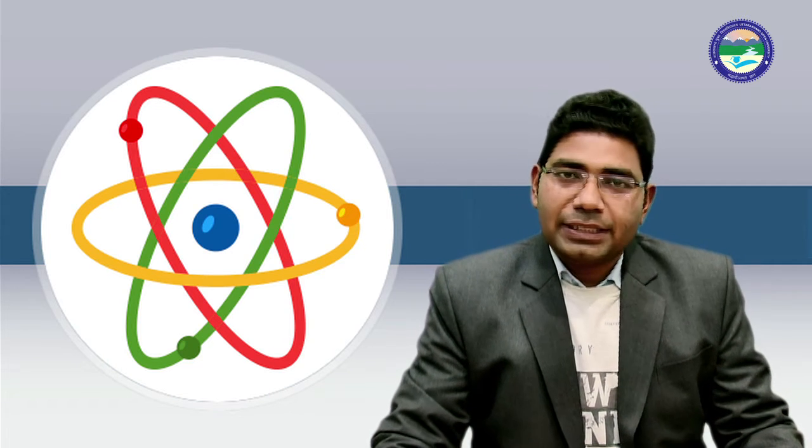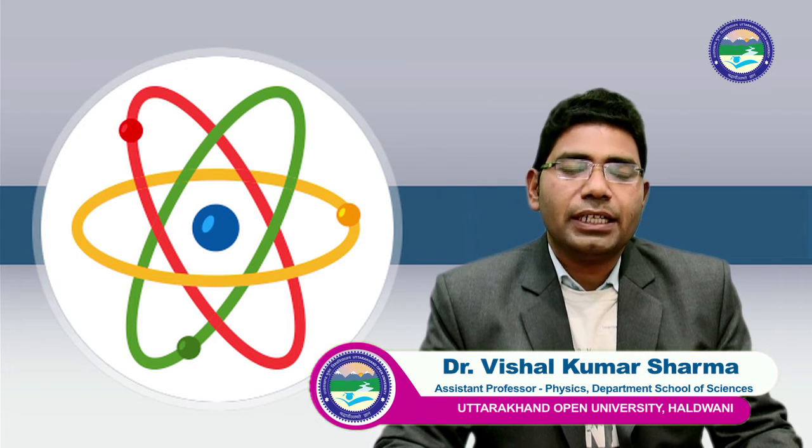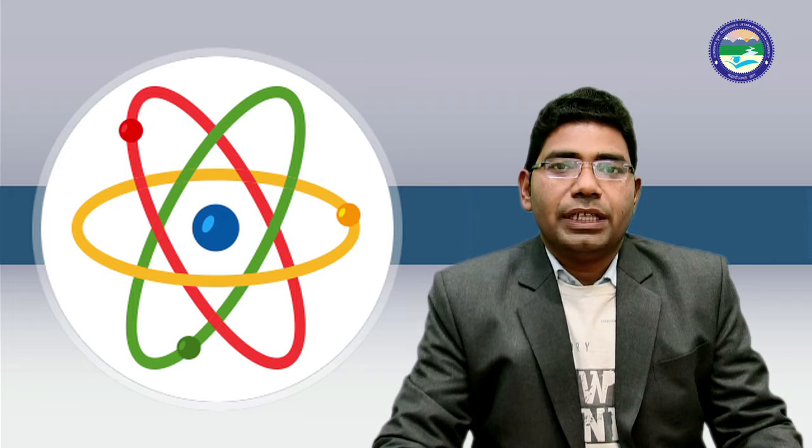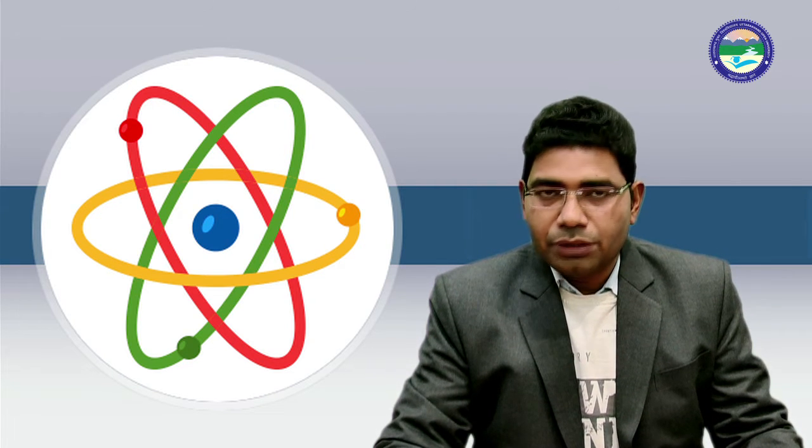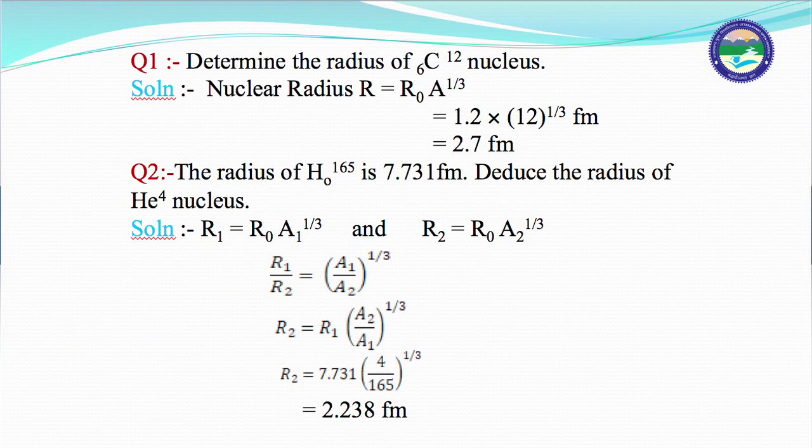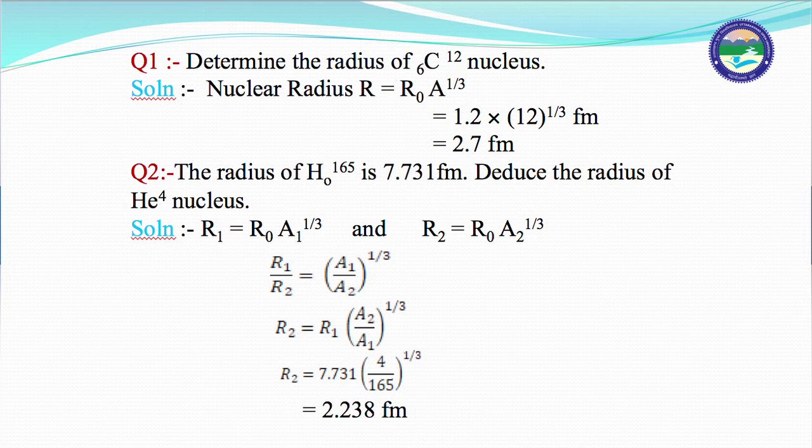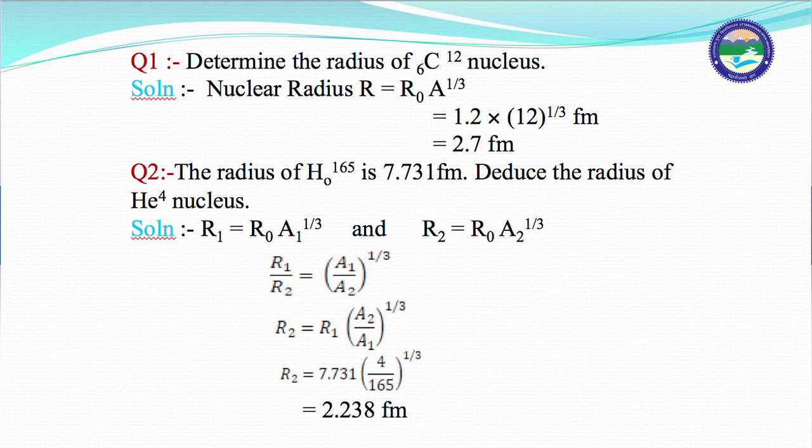We are also discussing some numericals which are asked in gate, CSIR NET, IIT JAM, and other competitive exams. For example, determine the radius of carbon-12 nucleus. Carbon is 6 C 12, where 6 is the atomic number and 12 is the atomic weight. We have nuclear radius R equals R₀ A to power 1 by 3. Here A is 12. Simply by utilizing this formula and keeping the value of the proportionality constant, you can calculate the nucleus radius which comes out to be 2.7 fermi.